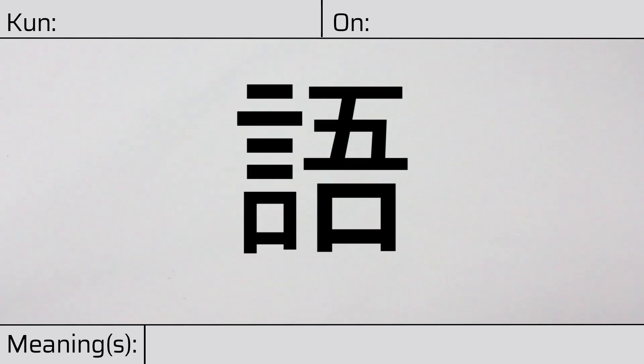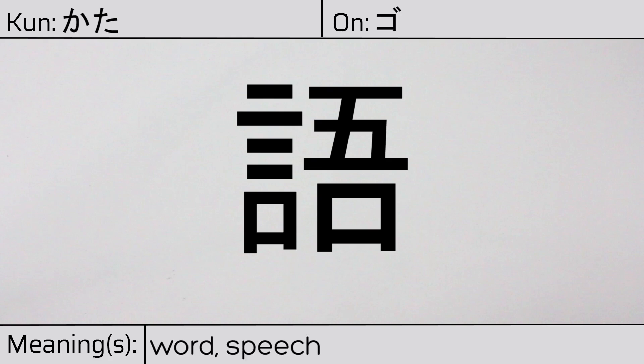Welcome to this lesson on Japanese kanji. Today, we'll be discussing this character. This kanji has a kunyomi or Japanese reading of kata, and it has an onyomi or Chinese reading of go. This character has the meanings word, speech, language, or tell.